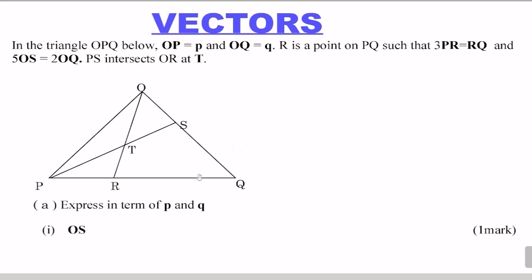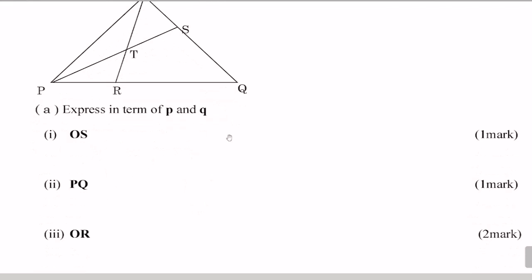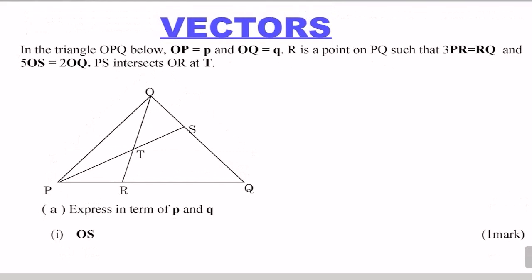Let's go to the first part. We're supposed to express in terms of p and q these vectors OS, PQ, and OR. Before that, let's look at this piece of information: 3PR equals RQ, and R is a point on PQ. So RQ is 3 times PR. That means the ratio here is 3 to 1 — RQ is 3 times PR and PR is 1.